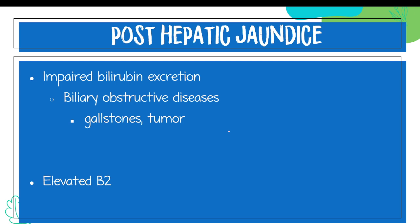Since there is effective conjugation but impaired excretion, what is elevated in post-hepatic jaundice is bilirubin 2. That is why in the laboratory it is always best to test bilirubin — both conjugated and unconjugated, and even total bilirubin — because we will be able to perform a differential diagnosis to assess exactly where the problem is.